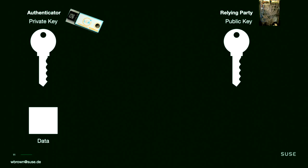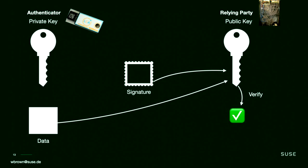At its core, WebAuthn is a form of public-private key cryptography, or asymmetric key cryptography. This is similar to past attempts at cryptographic authentication with things like PIV or smart cards. We have a private key stored in our authenticator and some data that we wish to sign. That private key can sign that data and create a signature, which is sent to our relying party, which has the public key. It can then validate that signature and is assured that only that private key could have created it.